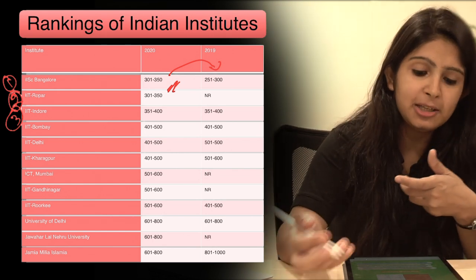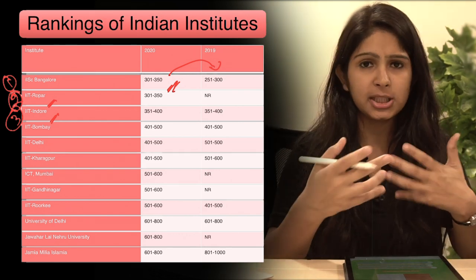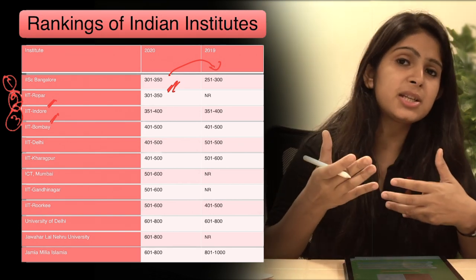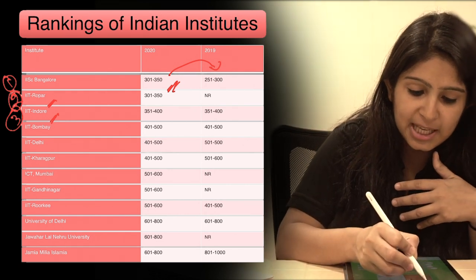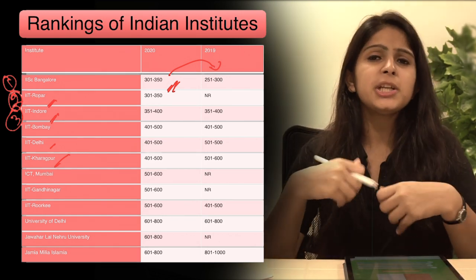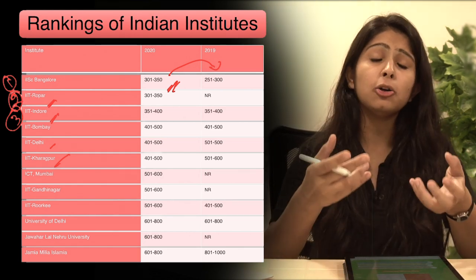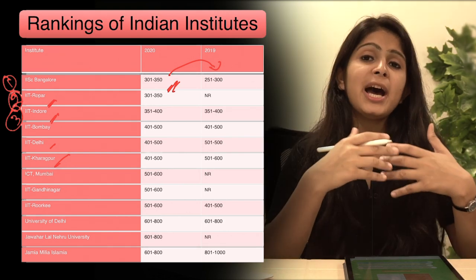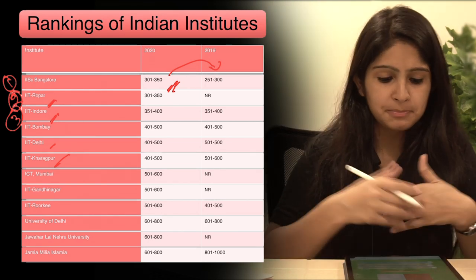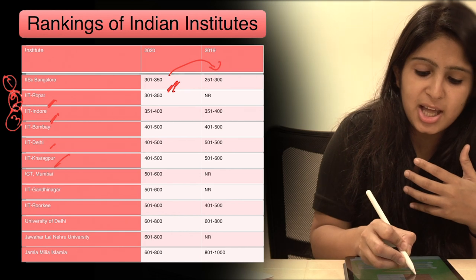So yaha pe ek noteworthy point ye hai ki IIT Ropar aur IIT Indore jo hain woh second generation of IITs se belong karte hain, that is they are very young IITs, unko establish huwe jyada time nahi hua hai. But still unke jo senior institutes hain like IIT Delhi, IIT Kharagpur, woh unse better rank leke aa rahe hain. So yaha pe jo ek positive point nikal kar aata hai woh ye hai ki jo younger institutes hain like IIT Ropar, IIT Indore, they are performing as well as older institutes like IIT Delhi and IIT Kharagpur, and in fact better than them.